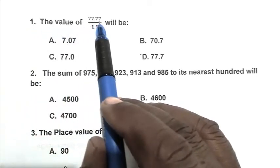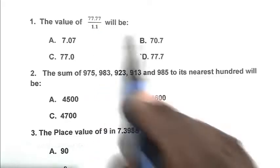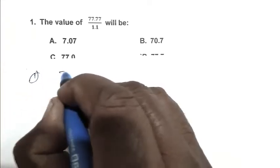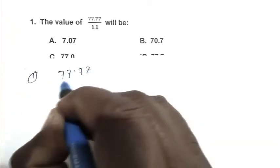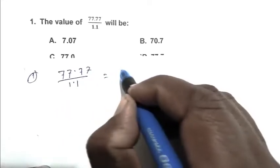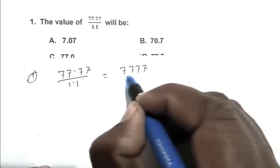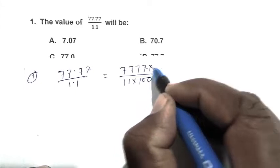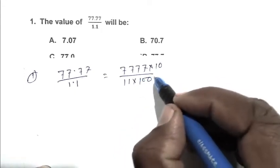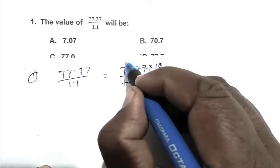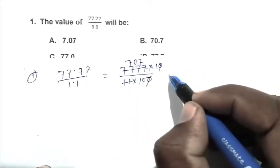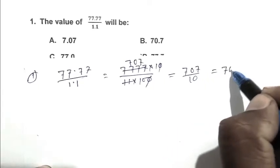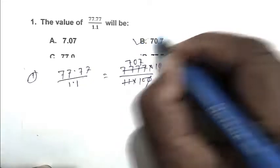Question number 1, the value of 77.77 divided by 1.1. We write the expression 77.77 divided by 1.1. Eliminating the decimal point we multiply by 100. So, 7707 divided by 110, that is 70.7. So, B is the right answer.